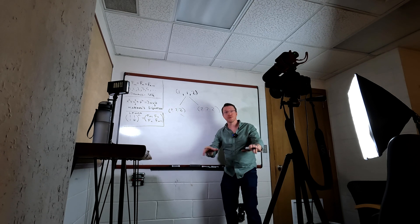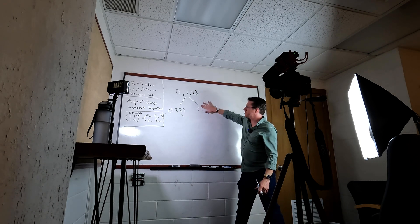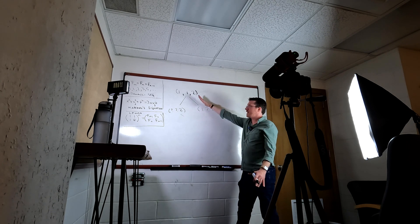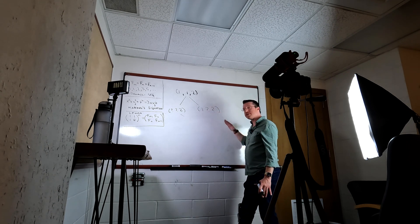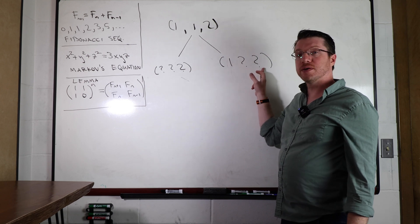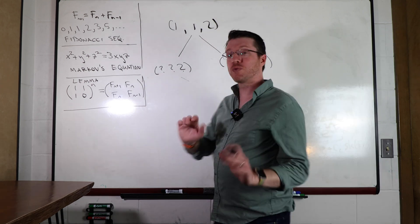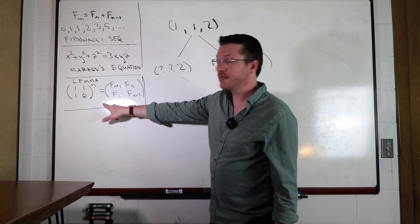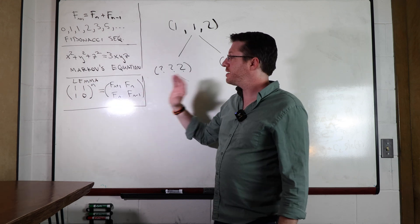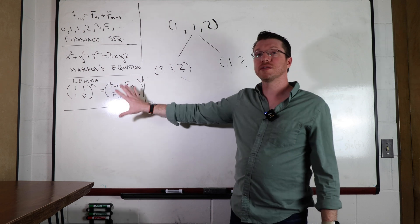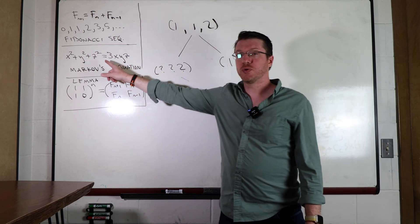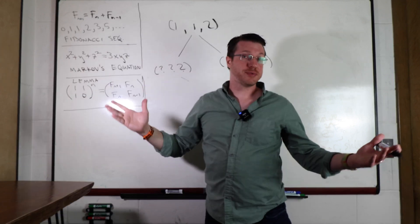What we're going to do is demand that one of the three numbers is always 1. This corresponds to staying on one branch of the tree. When you do that, it turns out the only things that fit in the other two positions are Fibonacci numbers. I'm going to start by proving a lemma, and from that lemma we'll get a nice equation we can apply to solving Markov's equation when we choose z equal to 1.